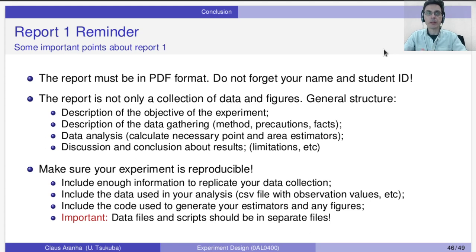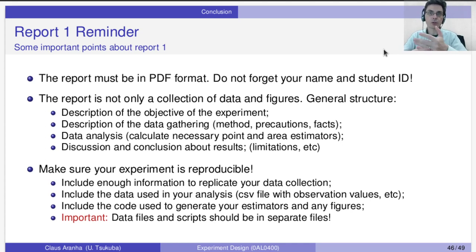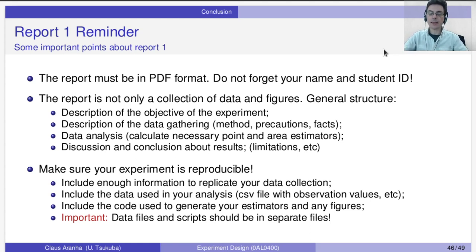What is a reproducible experiment? First, you need to include enough information to replicate your data collection. In your report, there should be enough information so that if I want to do the exact same experiment you did, I should be able to — I read your report, follow the steps, and hopefully get the same result. Second, include the data used in your analysis. In this class and previous classes, I always included a CSV file used to calculate the different tests, functions, and images. Similarly for you — after you do the experiment, put the data in a CSV file and include it together with your report.